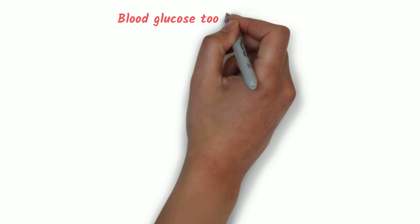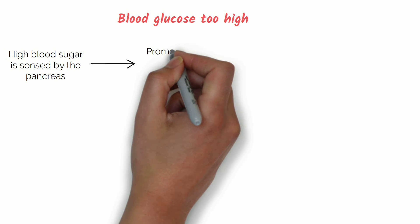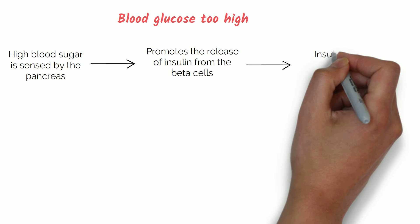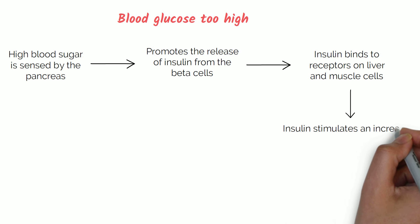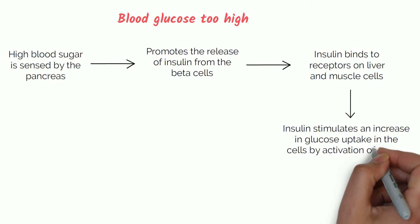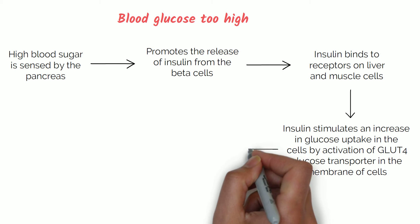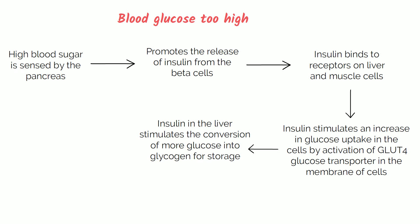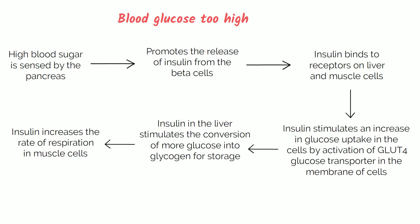When blood glucose is too high, high blood sugar is sensed by the pancreas, promoting the release of insulin from the beta cells. Insulin binds to receptors on liver and muscle cells, stimulating an increase in glucose uptake by activation of the GLUT4 glucose transporter in the cell membrane. Insulin in the liver stimulates the conversion of glucose into glycogen for storage, and increases the rate of respiration in muscle cells, overall acting to reduce blood sugar levels.